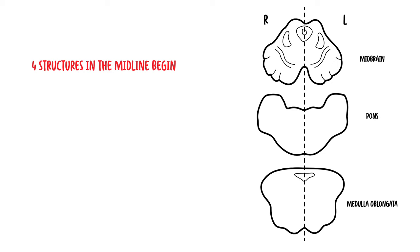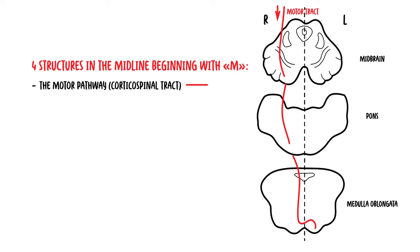The first rule is that there are four structures in the midline beginning with M. Medially in the brainstem, these are the motor pathway, which is the corticospinal tract. You have the medial lemniscal pathway, and this is your touch sensation.